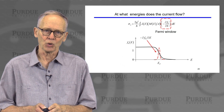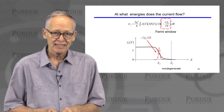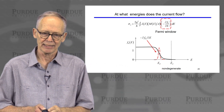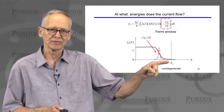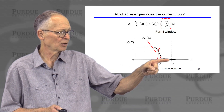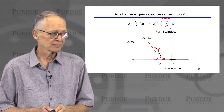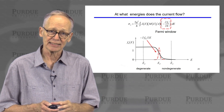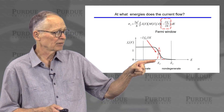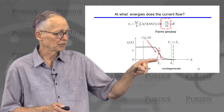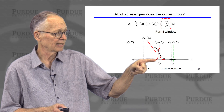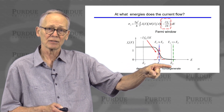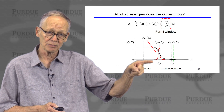Consider a non-degenerate semiconductor where the Fermi level is well below the bottom of the conduction band. Only the tail of the Fermi window contributes to current flow, and all current flows very close to the bottom of the conduction band. Now consider a metal or very heavily doped semiconductor where the Fermi level is well above the bottom of the conduction band — there are states right at the Fermi level, and the current flows right where the Fermi window is, i.e., at the Fermi energy. In the first case, current flowed near the bottom of the conduction band, far above the Fermi energy; in the second, it flows at the Fermi energy itself.